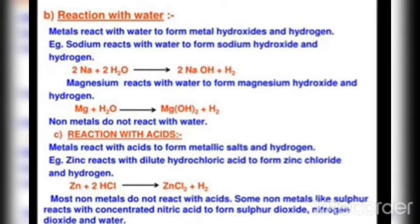The next property is reaction with water. Metals react with water to form metal hydroxide and hydrogen gas is evolved. For example, sodium reacts with water to form sodium hydroxide and hydrogen gas. Magnesium reacts with water to form magnesium hydroxide and hydrogen gas. In general, when metals react with water they form a metal hydroxide plus hydrogen gas. In the case of nonmetals, nonmetals usually do not react with water.